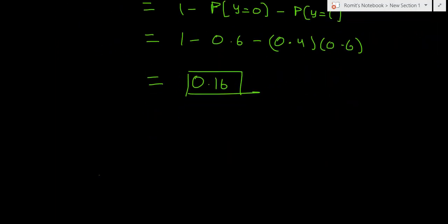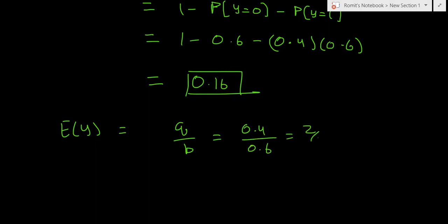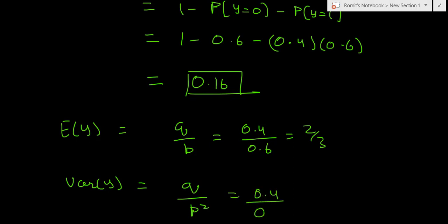The expectation of Y for Type 2 geometric distribution is q/p = 0.4/0.6 = 2/3. The variance of Y equals the variance of X, which is q/p² — both Type 1 and Type 2 geometric distributions share the same variance formula. So Var(Y) = 0.4/0.6² = 0.4/0.36 = 10/9 ≈ 1.11.